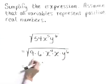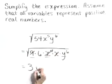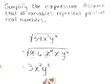Now let's take the square root of these pieces that are perfect squares. The square root of 9 is 3 so that came out. The square root of x to the fourth is x squared. That comes out of the radical. The square root of y to the sixth is y to the third power and that comes out.